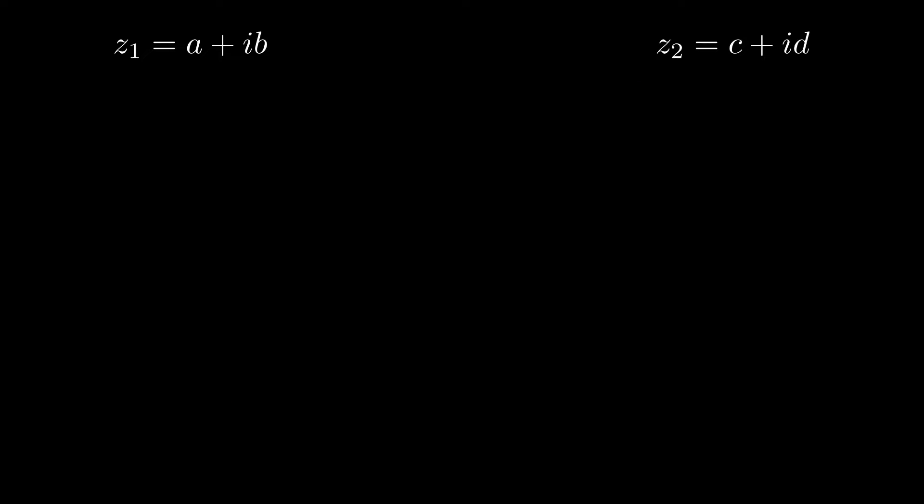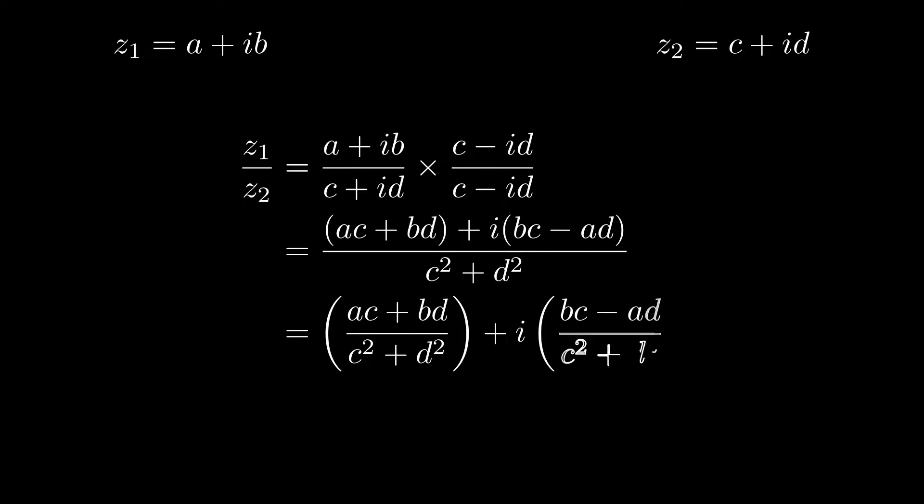We can use this to develop the process of division for complex numbers. We first multiply the numerator and denominator by the conjugate of the denominator and then simplify. This forms a real number on the denominator, allowing us to form a new complex number.